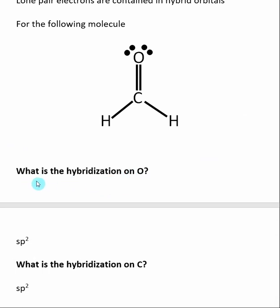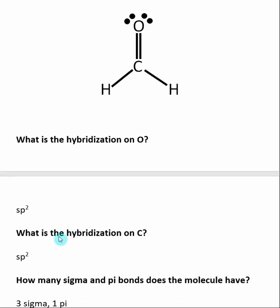The first question is, what is the hybridization on oxygen? You count electron groups — a lone pair counts as an electron group, and a double bond counts as one electron group. So the oxygen has three electron groups around it, so it is sp2 hybridized. The same thing is true for carbon. Carbon also has three electron groups, so it is also sp2 hybridized.